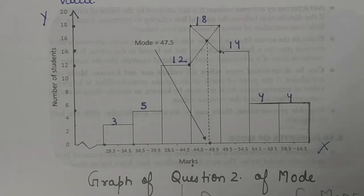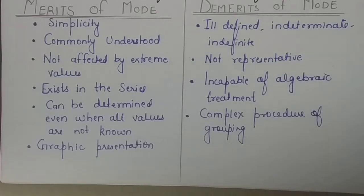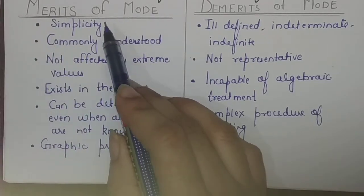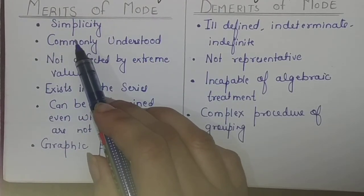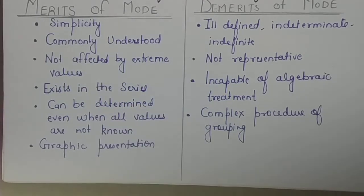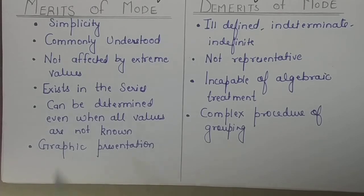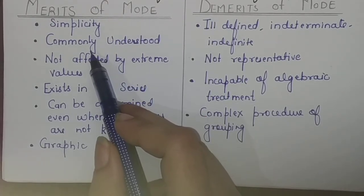Now let's talk about the merits and demerits of mode as a measure of central tendency. The first merit is simplicity. In a discrete series, you can find the mode by mere inspection — just from a simple glance. The next merit is that it is commonly understood.